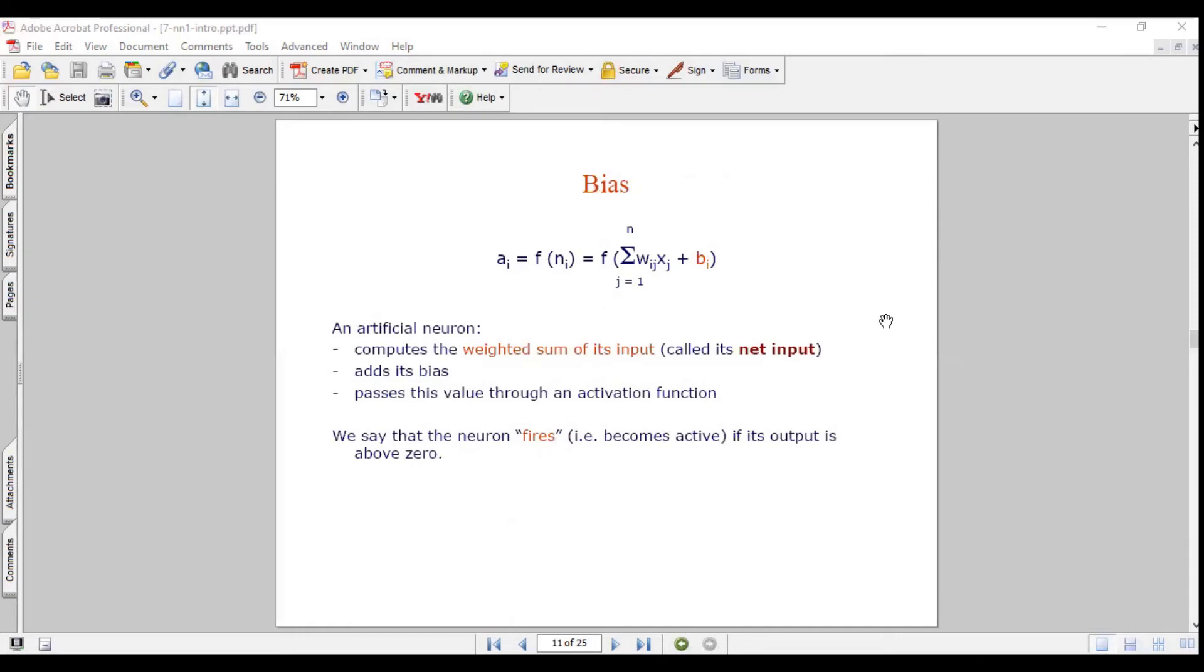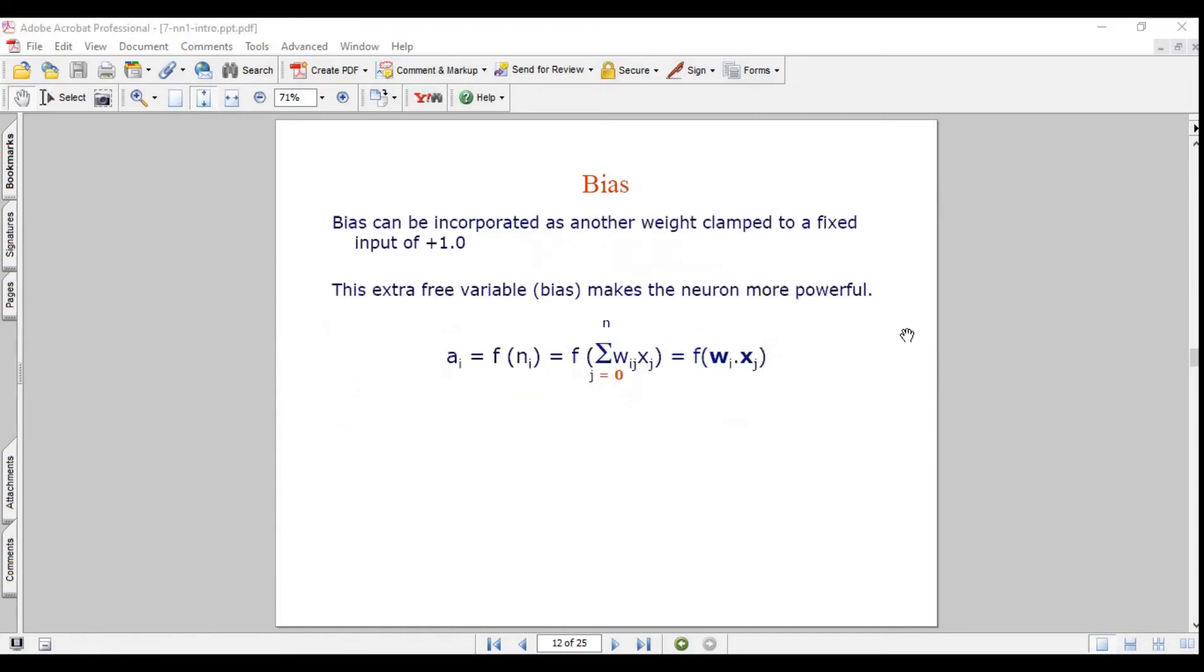A typical neuron computes the weighted sum of its inputs, adds its bias, and passes its value through an activation function. We say that a neuron fires when its output is above 0. We can find the formula: ai equals f of ni equals f of sigma j equals 1 to n, wij dot xj plus bi. In simple terms, this can be said as f of wi dot xj, j equals 0 to n. Bias can be incorporated as another weighted input clamped to a fixed input, plus 1.0. The extra variable, the bias, makes the neuron more powerful.